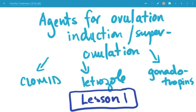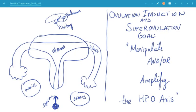Lesson number one: agents for ovulation induction and superovulation, specifically clomiphene citrate, also known as Clomid, letrozole, and gonadotropins. And we will talk about metformin. Whenever we think about agents of ovulation induction, we have to review our HPO axis.